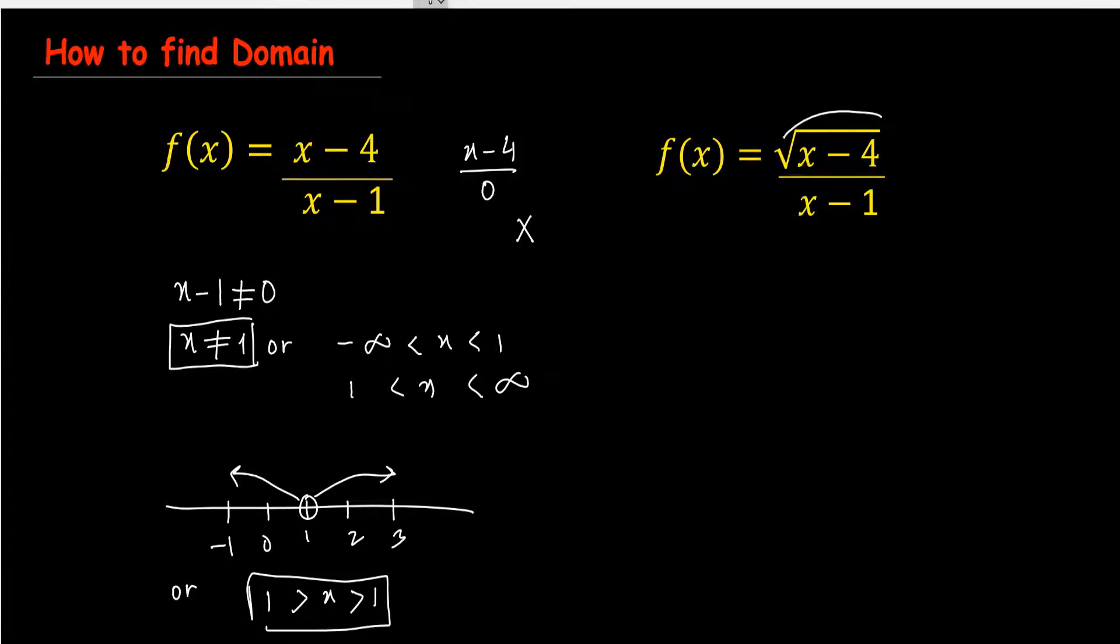When we move to this part, we consider both things. We also consider the radical and the denominator. When we use the denominator, we have the same thing here: x minus 1 is not equal to 0, and x is not equal to 1. This is the first case for the domain.